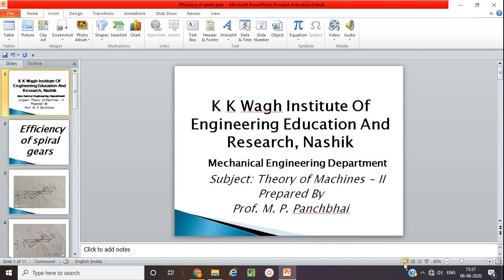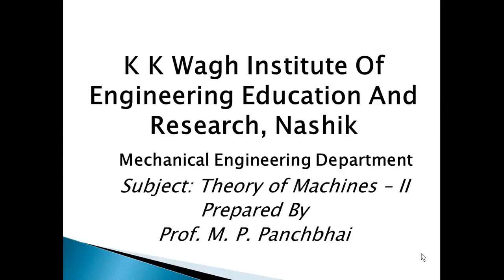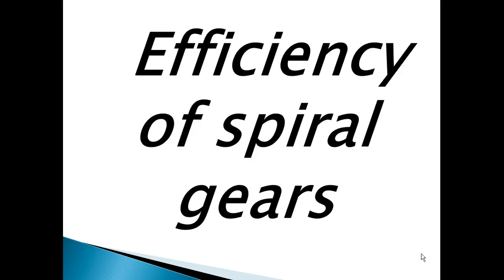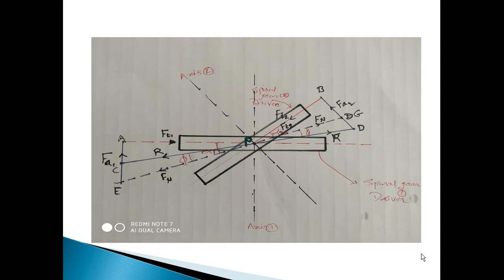Hello, good morning friends. Today our topic is efficiency of spiral gear — one of the important topics for spiral gear. I am Professor Panchabai from KKO College of Engineering. In this diagram you can see two gears are shown — a line diagram only — where this horizontal one is gear number one, which is the spiral gear, also called the driver. The pitch circle diameter is drawn at some inclination, that is the driven gear number two. Both gears intersect at the pitch point P.